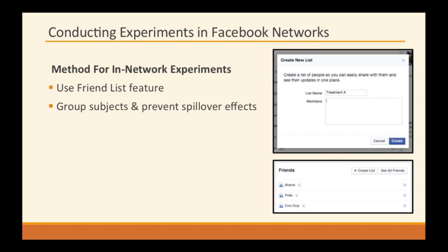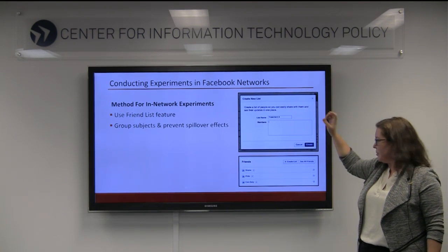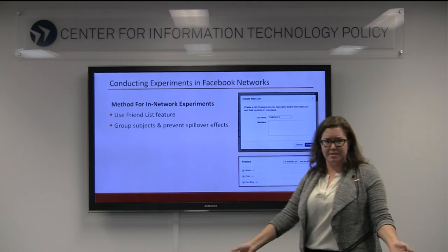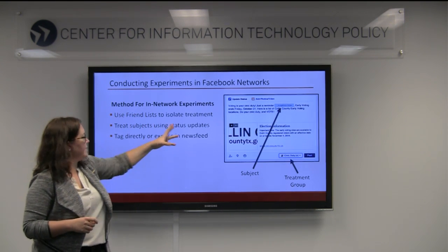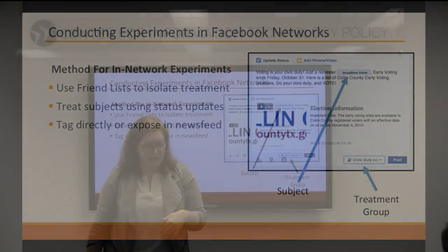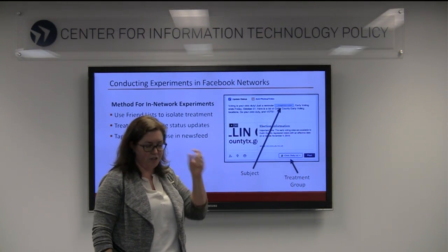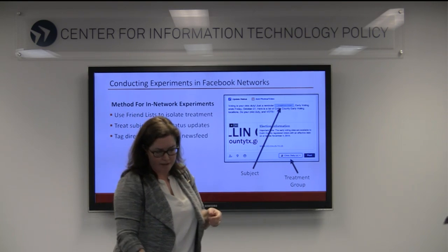Here you can see what it looks like: create a new list, type the names of the people you want in the treatment group or control group, and you can see the list of friends on your friend list page. In terms of the actual treatments, the experiments I do mostly use status updates. Here's an example of a status update with a voting reminder — it tags the subject of the experiment and is visible only to the treatment group. That way, we know the treatment can only be seen by people in the treatment group, the control group cannot see anything, and any difference in the outcome is due to the treatment itself. You can also use group settings to change what people are exposed to in their news feed coming from the Confederate.